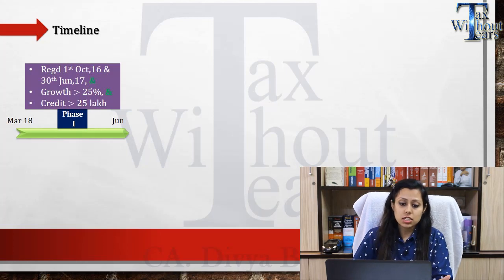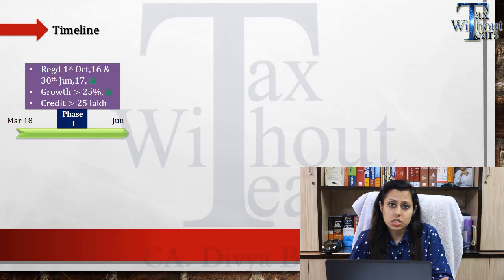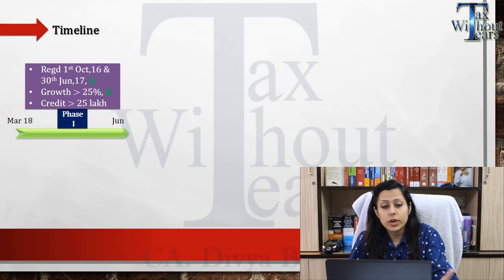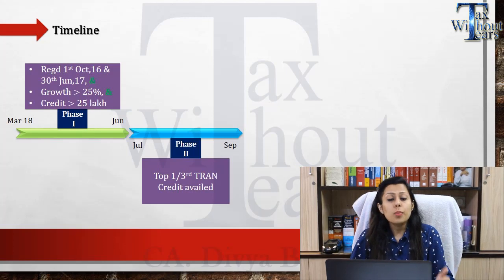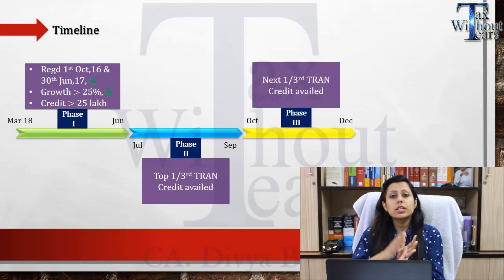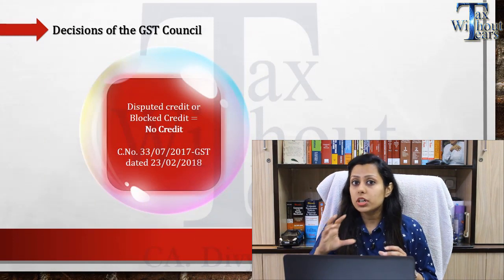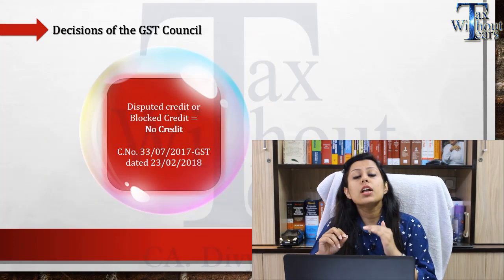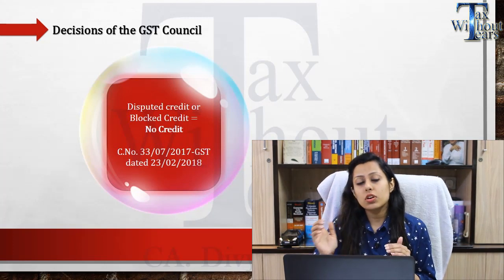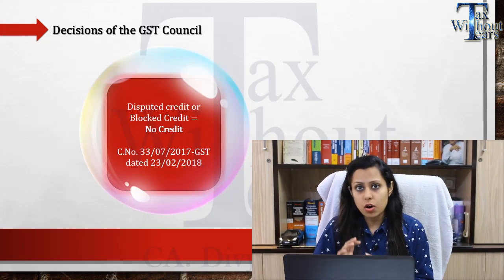In the second phase, checking of the top one-third transitional credit claimed by taxpayers will be done. In the next phase, the second layer of these taxpayers will be covered, and lastly, the third layer will be checked from January to March 2019. As per the GST Council's decision, whatever is your disputed or blocked credit, you will not be allowed to take that credit in your transitional form or in your normal returns. If you have claimed it, you need to reverse it along with interest and other consequences.